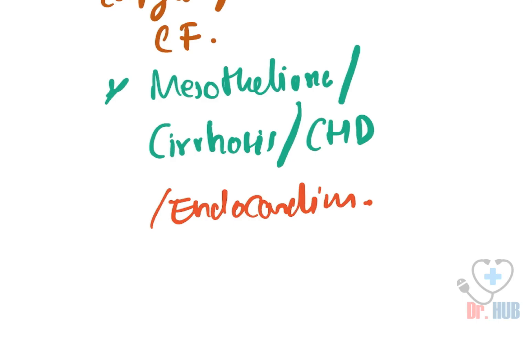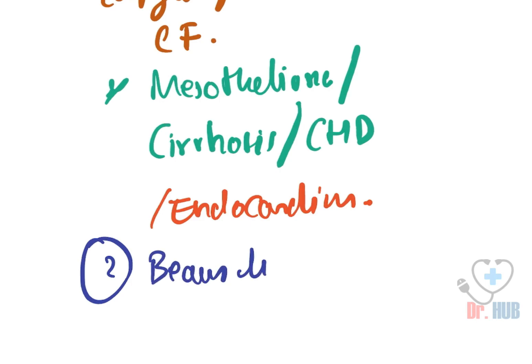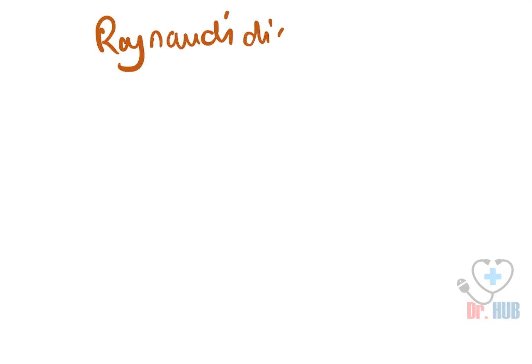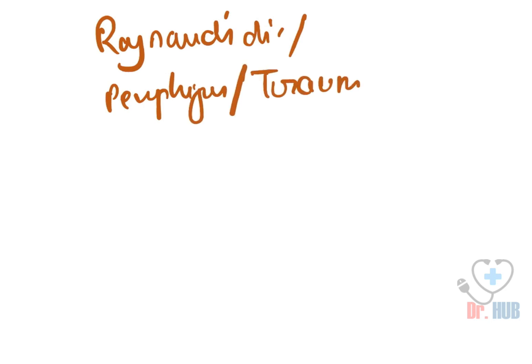Question two: where is the Beau's line seen? Beau's lines are seen in any severe systemic illness that disturbs nail growth, including Raynaud's disease, pemphigus, and trauma.